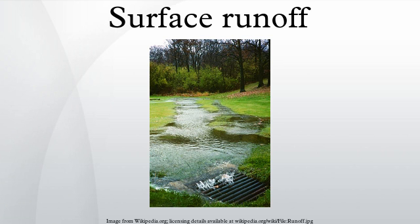Antecedent soil moisture: soil retains a degree of moisture after a rainfall. This residual moisture affects the soil's infiltration capacity. During the next rainfall event, the infiltration capacity will cause the soil to be saturated at a different rate. The higher the level of antecedent soil moisture, the more quickly the soil becomes saturated. Once the soil is saturated, runoff occurs.